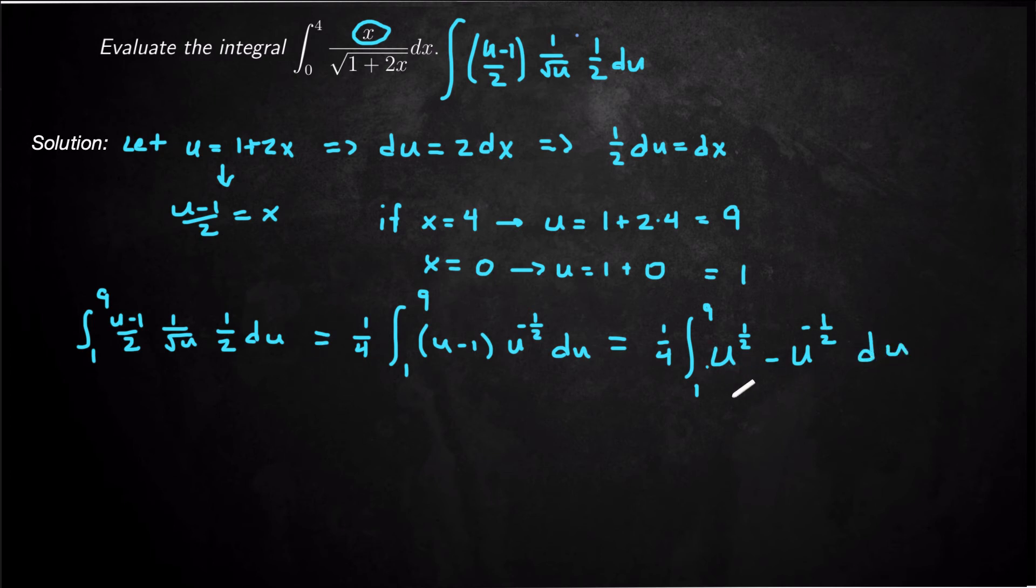So now I just have to use the power law on both of these terms. So this is going to be 1 over 4 times, let's see, 1 plus 1 half is 3 halves. So this is going to be 2 thirds u to the 3 halves minus 1 plus negative 1 half is 1 half. So that's going to be 2 u to the 1 half from 1 to 9.